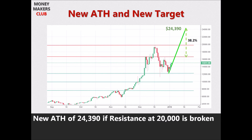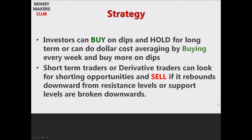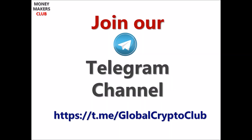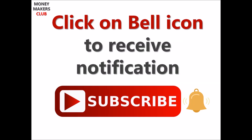The strategy for investors is to buy on dips and hold for the long term, or do dollar-cost averaging by investing a fixed amount every week and more on dips. Short-term and derivative traders can look for shorting opportunities by selling on rebounds from resistance levels and buying back at lower levels. In any case, stay diversified — don't put all your eggs in one basket. There are many promising ICOs and altcoins giving better returns than Bitcoin; some ICOs recommended by Money Makers Club in 2017 made 500% to 1000% returns. Join our Telegram channel for regular updates on Bitcoin and Ethereum analysis and ICO reviews. Subscribe and click the bell icon to get notified whenever a new review is published.